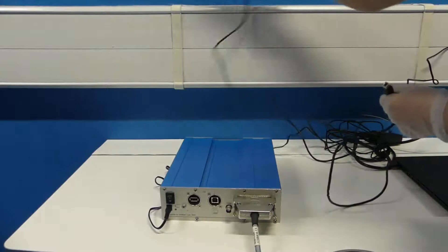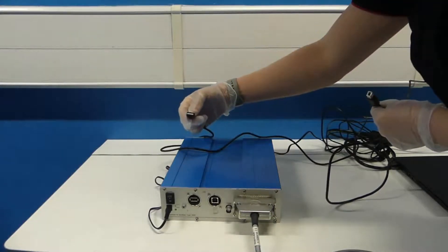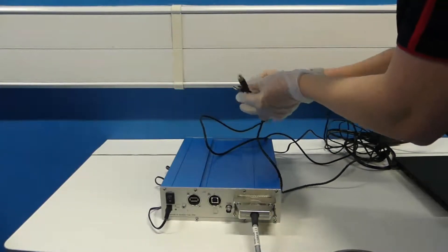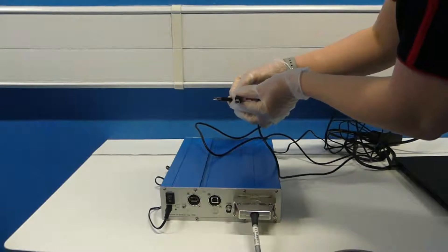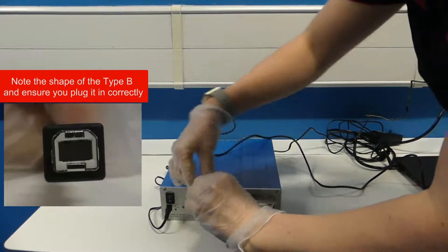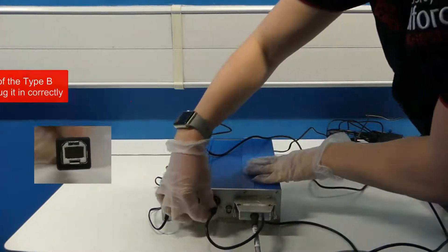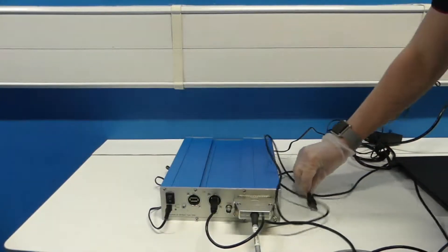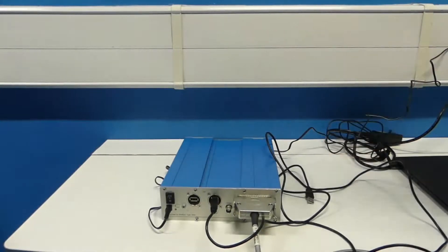Next plug the USB cable in. Here it is important to note that the USB cable has different connections on the end, a type A and a type B, and you must ensure you plug it in correctly. Here plug the type B end into the interface box and the type A which is a standard USB will eventually go into the laptop. However do not do this yet.